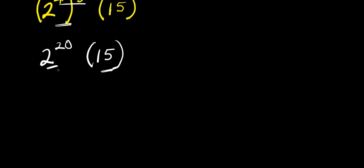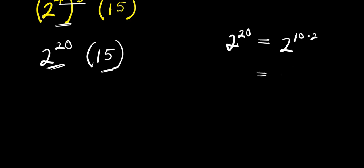Now, I can copy out 2 to the power of 20. This equals 2 to the power of 10 times 2, and of course 10 times 2 is 20. Now, I can as well express this as 2 to the power of 10, raised to the power of 2. And from here, I can find out the value of 2 to the power of 10.